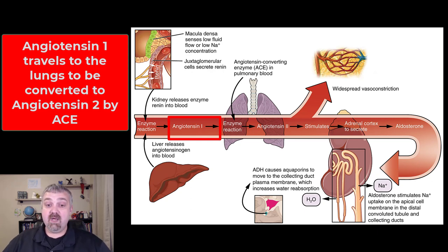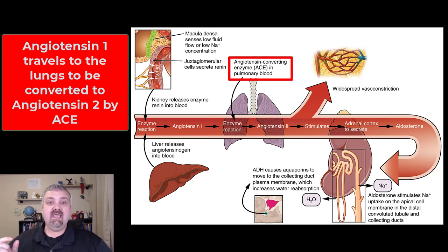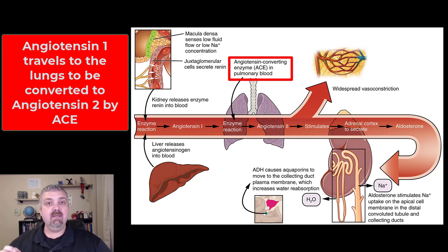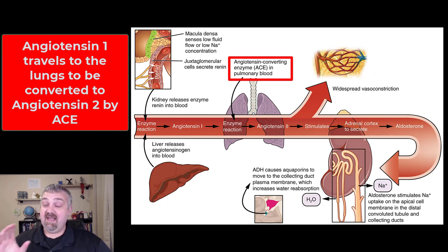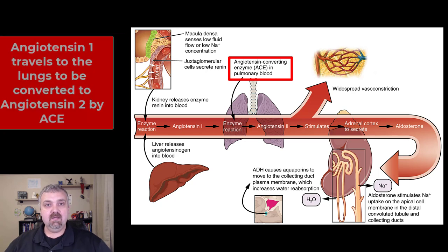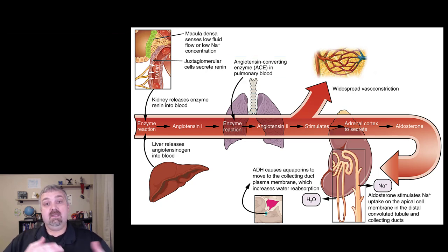Angiotensin-1 travels to the lungs, where in the pulmonary blood it is converted to angiotensin-2 — probably the most important compound here — by an enzyme called angiotensin-converting enzyme, or ACE. That's very significant because that's where most of our blood pressure medications come from; they're called ACE inhibitors. So we've gone from renin, which creates angiotensin-1, which has now been converted to angiotensin-2.